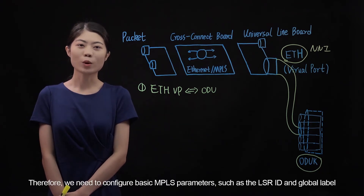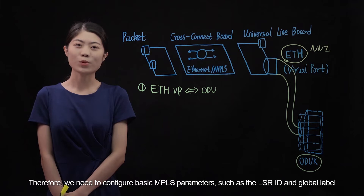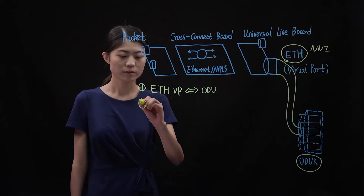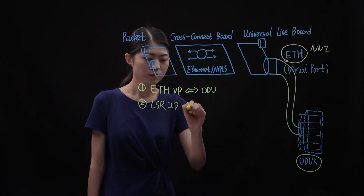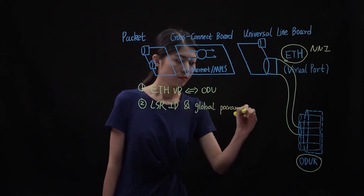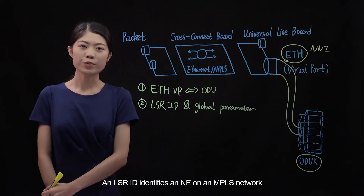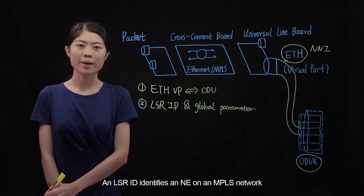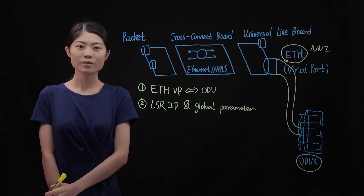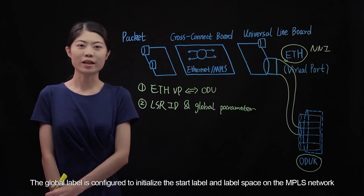Therefore, we need to configure basic MPLS parameters such as the LSR ID and global label. An LSR ID identifies an NE on an MPLS network. Only an NE configured with an LSR ID can function as a transmission node on the MPLS network.